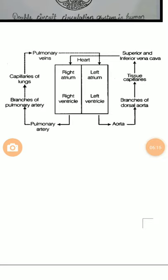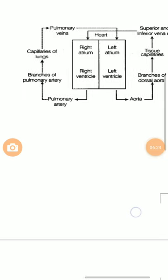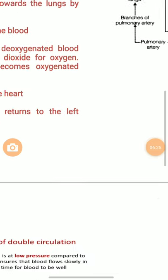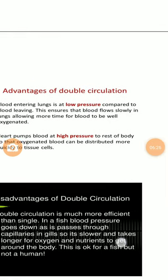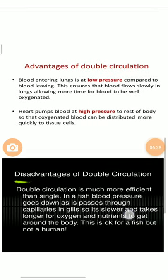One important point is that oxygenated and deoxygenated blood are never mixed. This is the uniqueness of double circulation. Now let us talk about the advantages of double circulation.